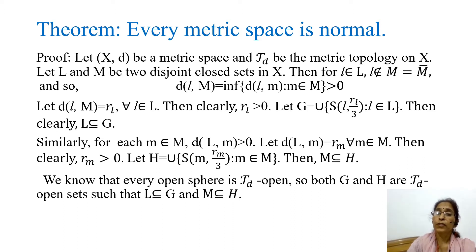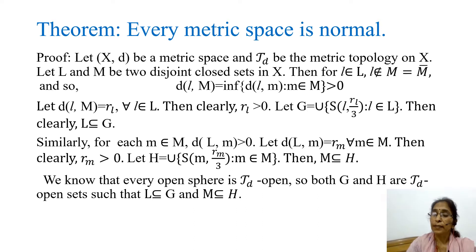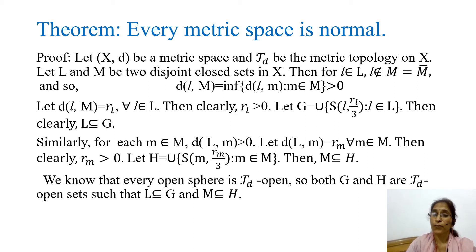Let us denote this distance by r_l, where small l belongs to capital L. Then r_l is positive. Let G be the union of open spheres with center l and radius r_l/3, where small l belongs to L. Then, since for each point of L there is such an open sphere, L is clearly contained in G.